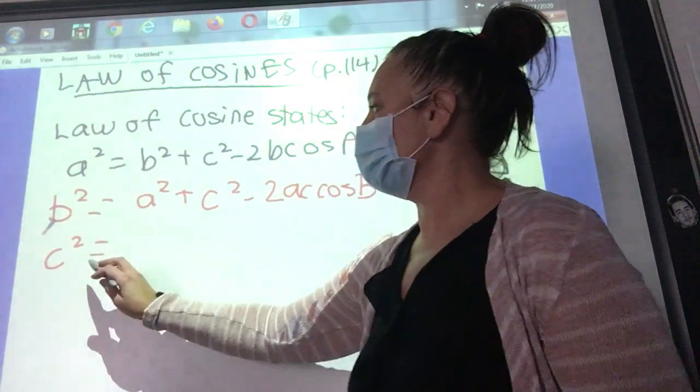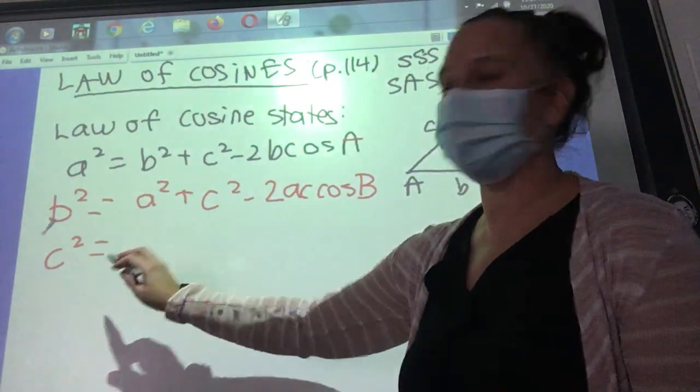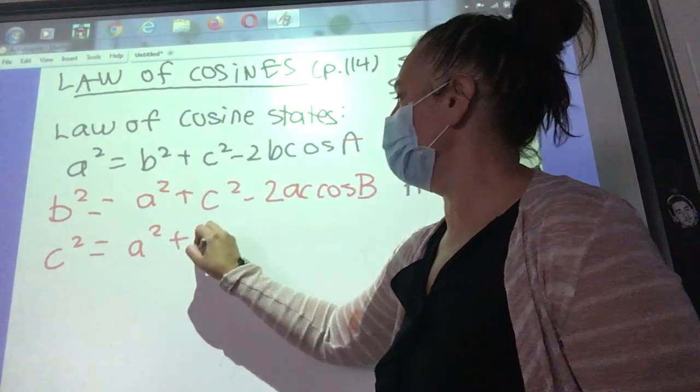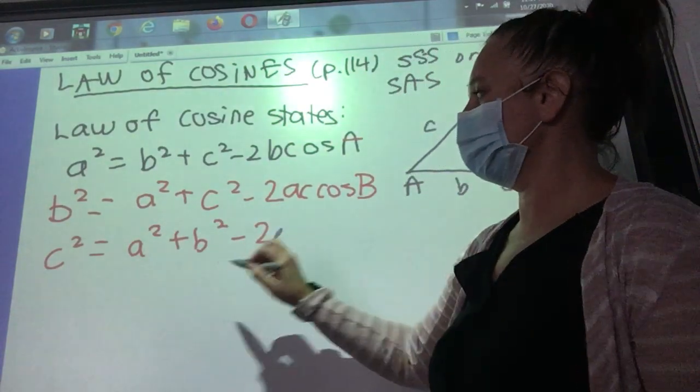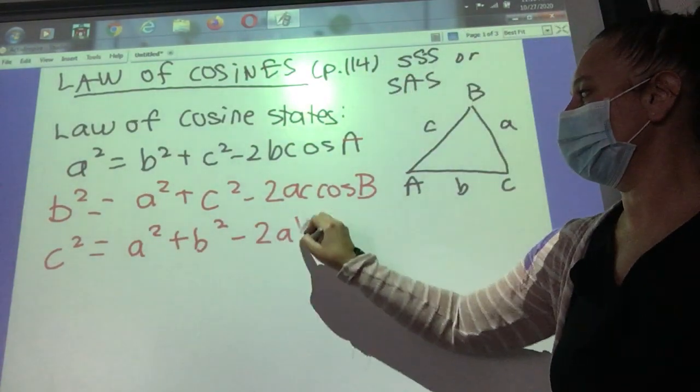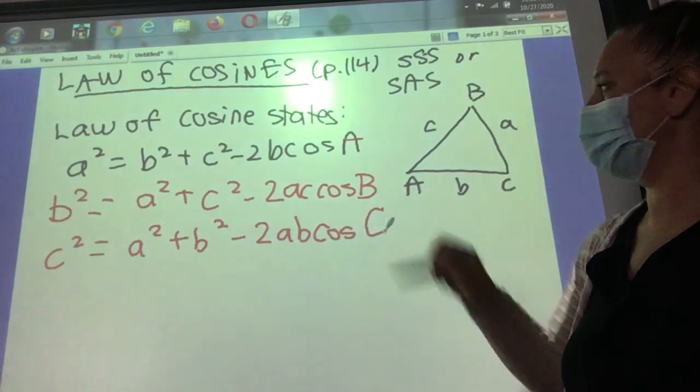What if we were given angle C or had to solve for angle C? So then the alternate version, if this is C squared, then the two remaining sides are A squared, B squared, still minus 2, now it would be AB, and then the angle here is angle C.